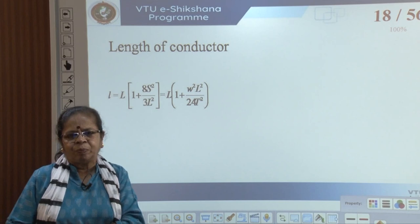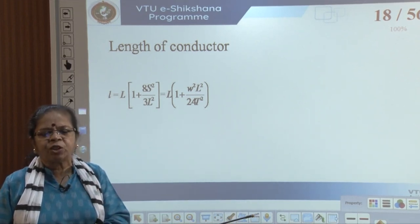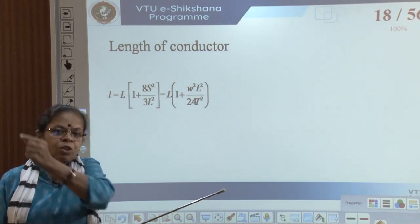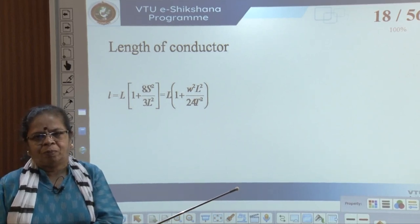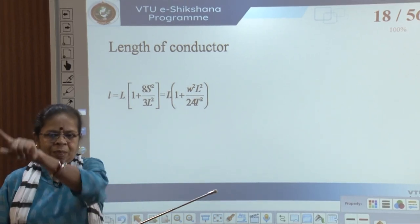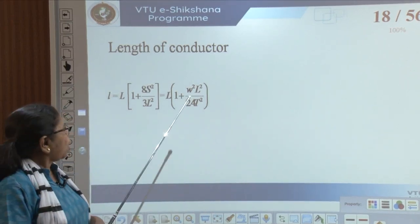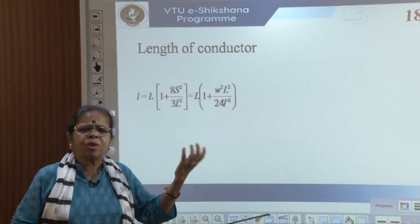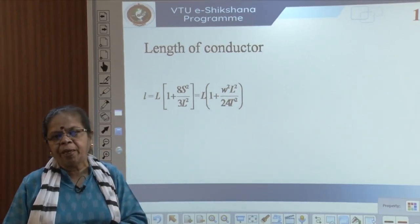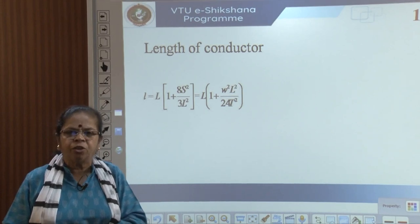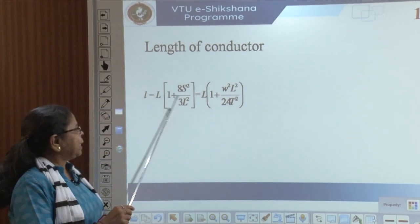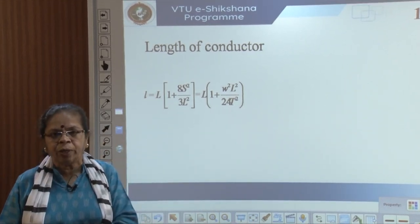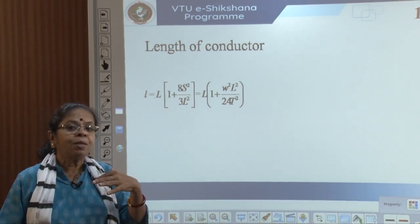Since it is a catenary, there is a formula for the total length of conductor required. From the equation of a catenary, the length is approximately given by L(1 + 8S²/3L²). This will give you an idea of how much conductor length is actually required when you make provision for the span.